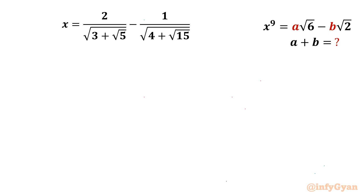Welcome back to Infigyan, my dear friends. In this video we have one very interesting and challenging question from Radical Mathematics. Here we have x known which is 2 over root 3 plus root 5, minus 1 over root 4 plus root 15, and x to the power 9 is a root 6 minus b root 2. Then we have to evaluate a plus b value. So let us get started with the method of rationalization.